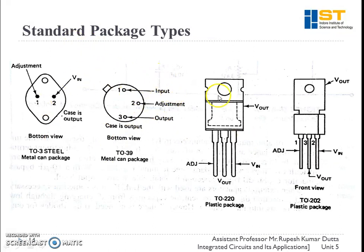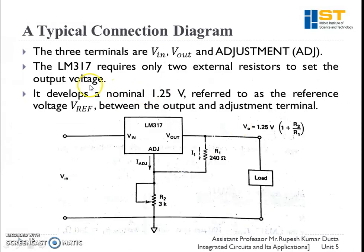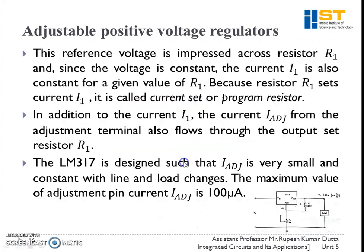Adjustable voltage regulators come in different standard packages such as metal can or plastic packages. They have three terminals: V_in, V_out, and adjustment. Two resistors R1 and R2 are used to set the output voltage V_out. The device develops a 1.2V reference voltage, called V_ref, between the output and adjustment terminals. This reference voltage is impressed across resistor R1, and since the voltage is constant, current I1 is also constant for a given value of R1. Because R1 sets the current I1, it is known as the current set or program resistor.